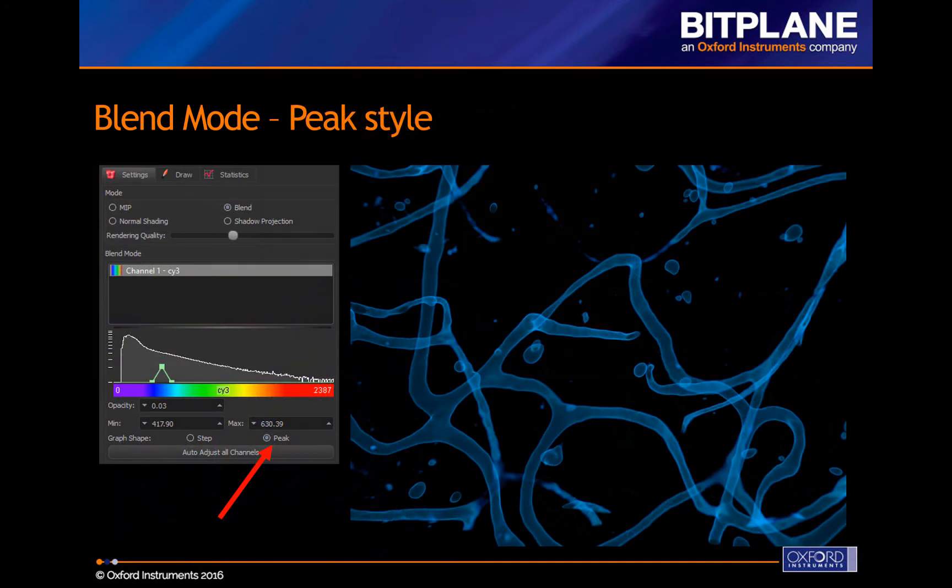And finally, at the bottom of the tab, you'll see a Peak option for the graph shape. Clicking Peak adds a third control point, and the rendering is now restricted to a band of intensity values. We've found this option to be useful while tracing neurons.